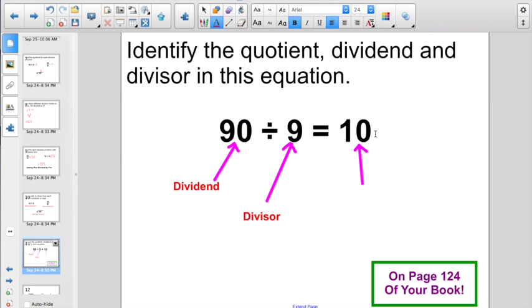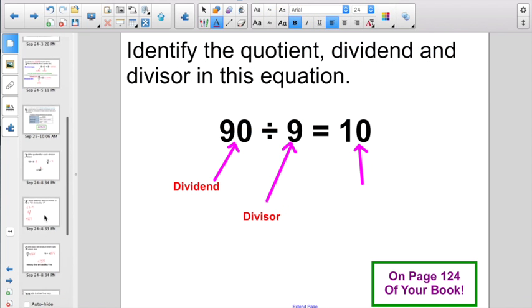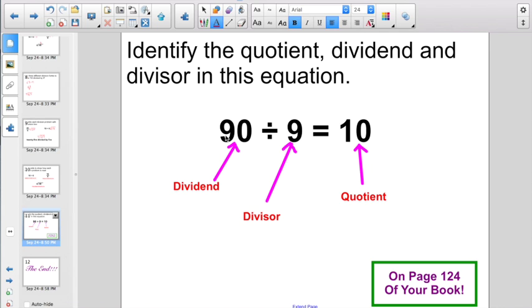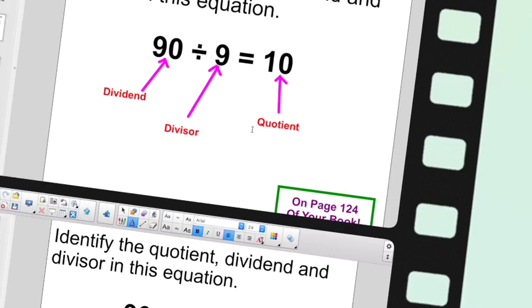Or, let's take a look at this last one, the answer of a division problem. Again, if you're not sure, page 124 of the book, the answer of any division problem is always the quotient. So, you would just have to write out the problem, draw in some arrows, and label each part dividend, divisor, or quotient. Whatever they are asking you.